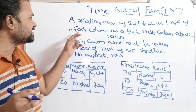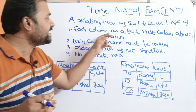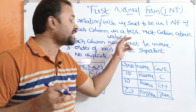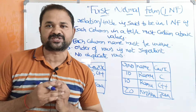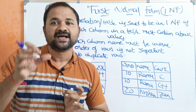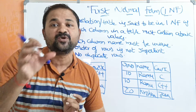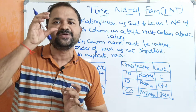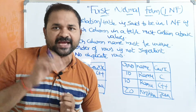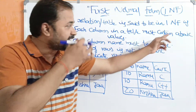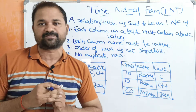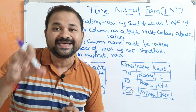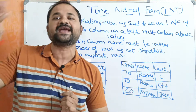The first condition is: each column in a table must contain atomic values. Atomic means undivisible values. That means all the attributes of a table must be atomic in nature. There should not be any multi-valued attributes.